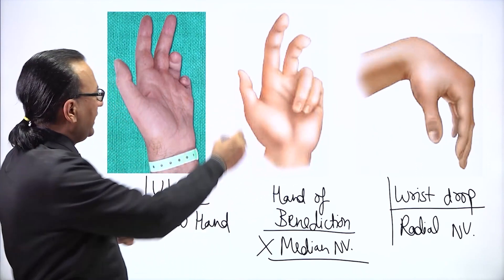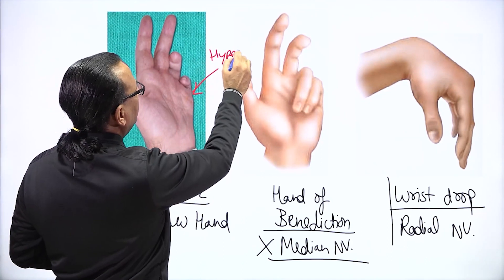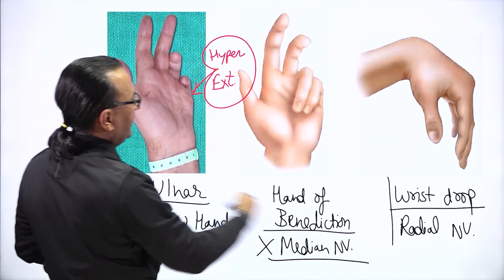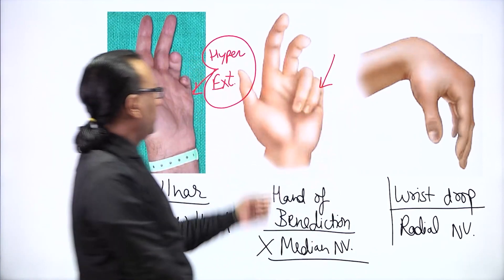One difference. What you find here is in ulnar claw hand, there is hyperextension at the metacarpophalangeal joint, which you will not find in a case of median nerve injury. So that is one major difference you can see.